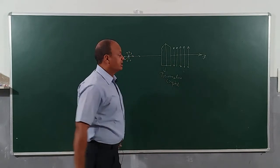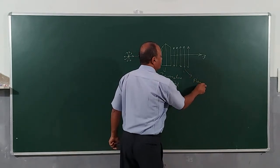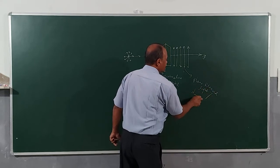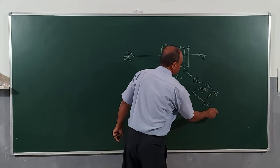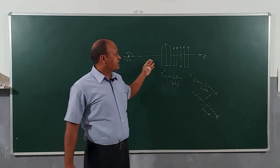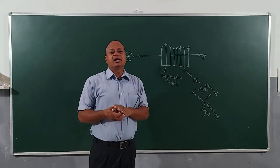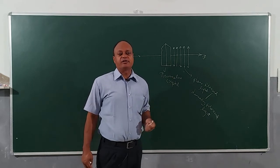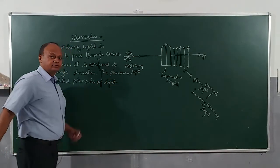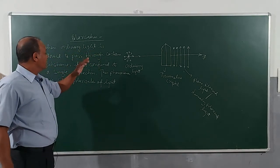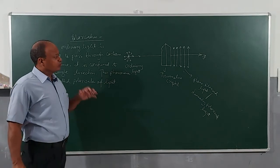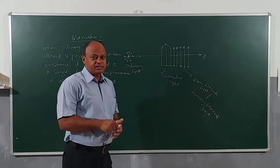The phenomenon of confining ordinary light to a single direction after passing through certain substances is called polarization. And this light, now confined to a single direction, is called plane polarized light, also known as linearly polarized light. When ordinary light is allowed to pass through certain substances, it is confined to a single direction perpendicular to the direction of propagation of light - this phenomenon is called polarization of light.